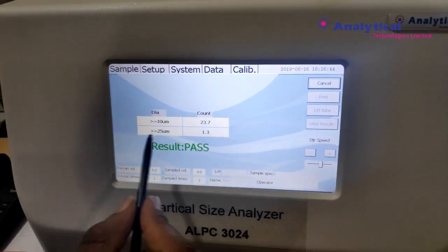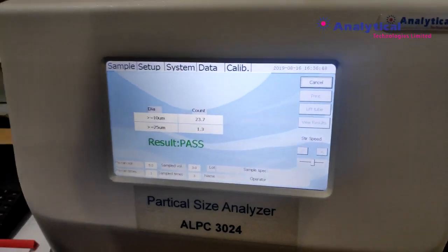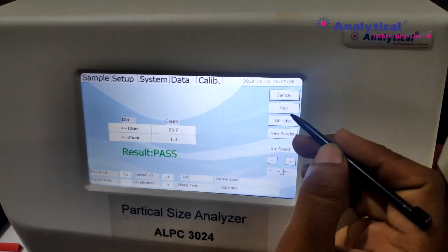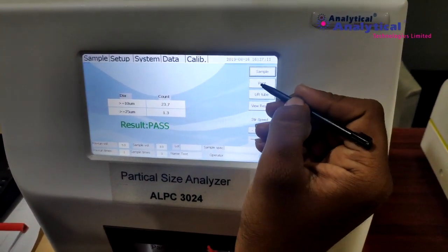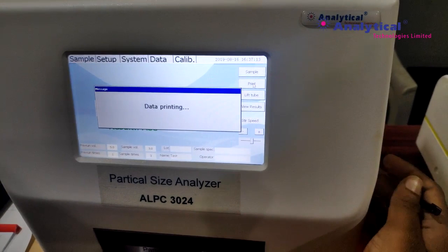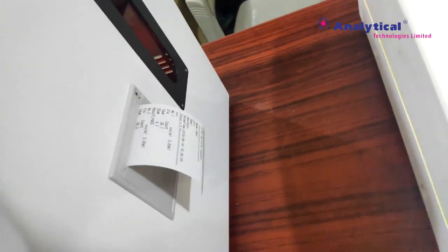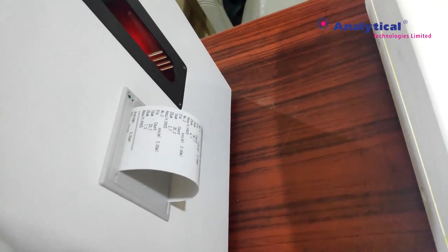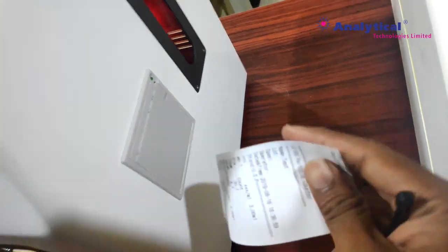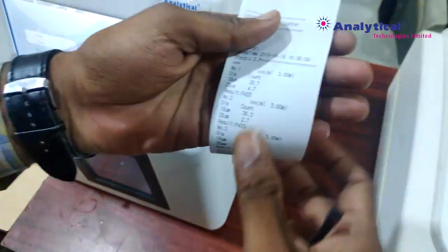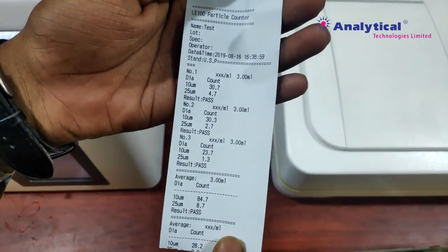You can see directly the results of these three samples. Now we can print it directly with the particular three samples data. You can print it directly with the average ratio of this particular sample.